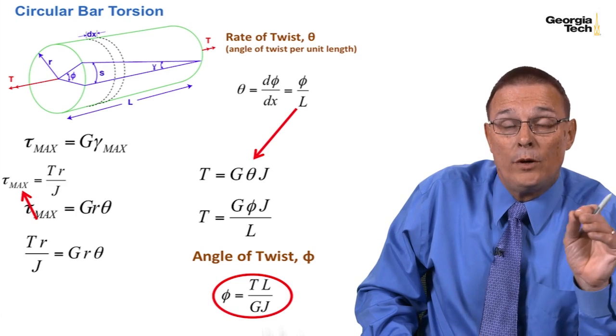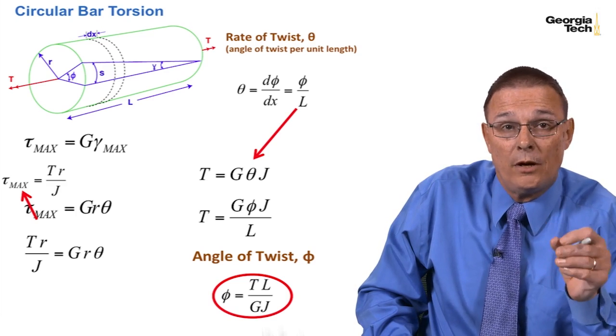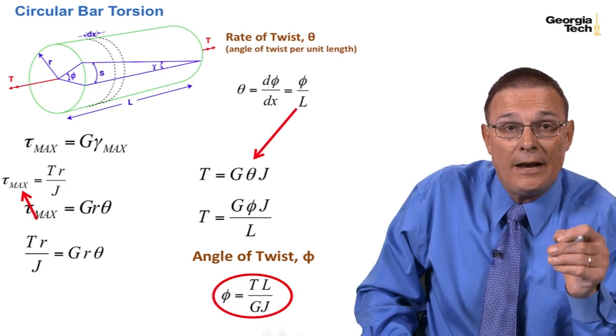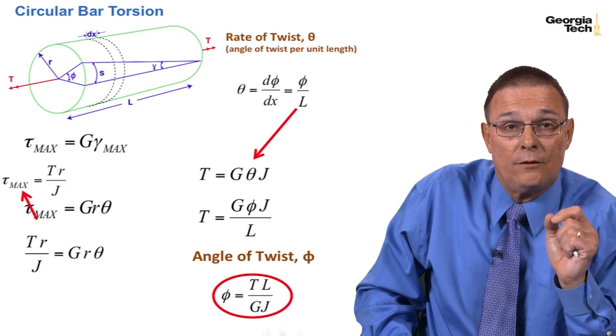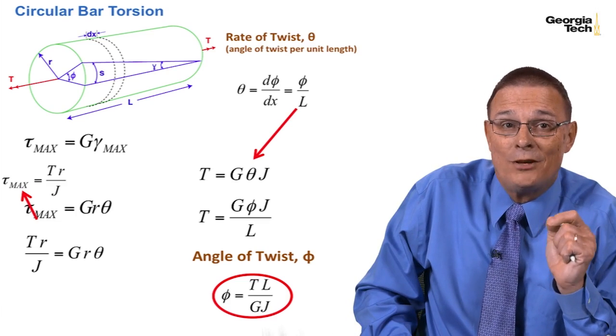And so, that's how we will, in our examples, when we start doing our example problems, find how much our bar, our engineering member has twisted, the angle of twist. And so, that's it for this time.